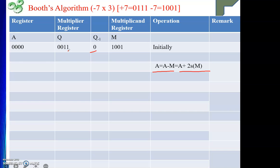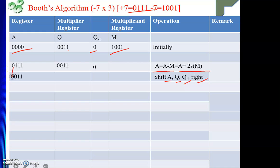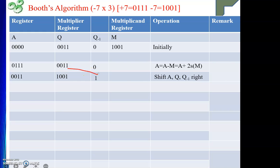After the addition, A becomes 0 1 1 1, and the multiplier Q remains 0 0 1 1, and Q minus one remains 0. Now we perform ASHR on the combined A, Q, Q minus one as a single unit. The sign bit 0 is copied, and everything shifts right: A becomes 0 0 1 1, the LSB of A shifts into Q, Q becomes 1 0 0 1, and Q minus one becomes 1. The first cycle is now complete.